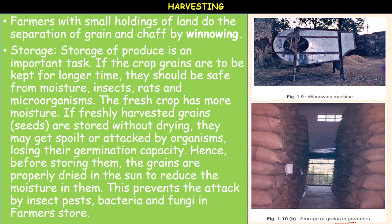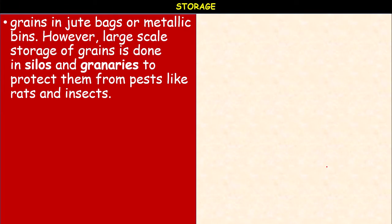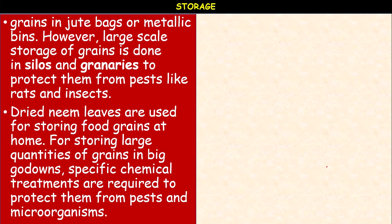The granaries are the places where grains are stored in gunny bags. The grains in jute bags are kept in metallic bins. The large-scale storage of grains is done in silos and granaries to protect them from pests like rats and insects. Dried neem leaves are used for storing food grains at home. For storing large quantities of grain in big godowns, specific chemical treatments are required to protect them from pests and microorganisms. They are filled with food grains and stocked in large godowns on wooden platforms, stored about 10 to 15 centimeters above the ground and about 70 centimeters away from the wall.